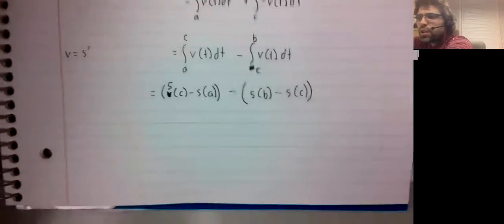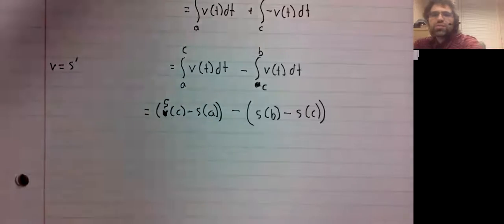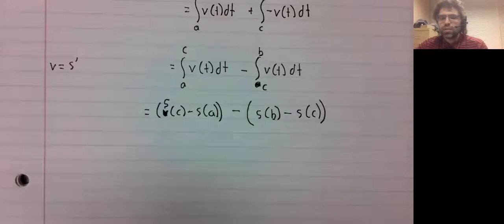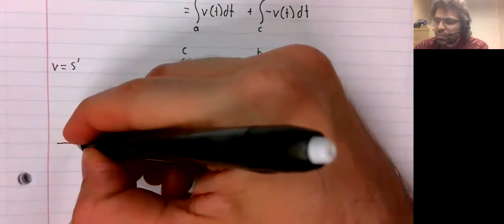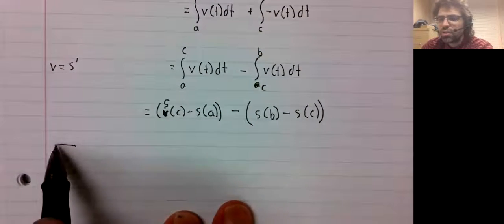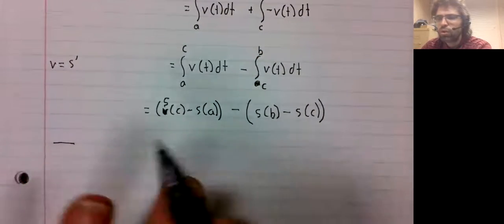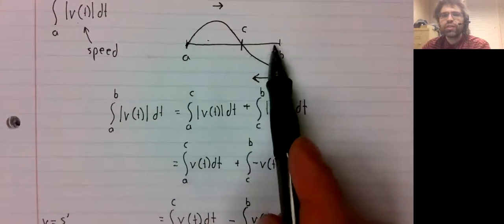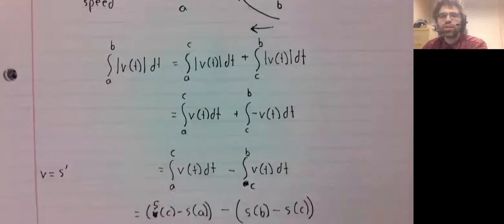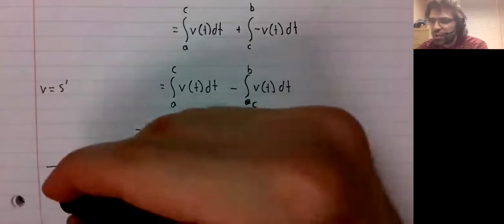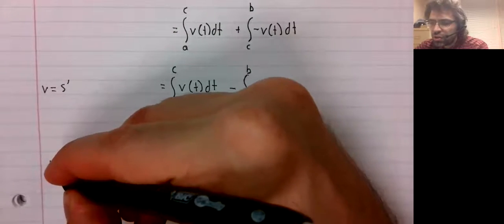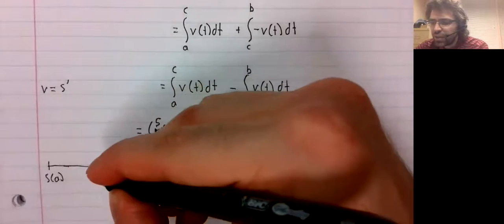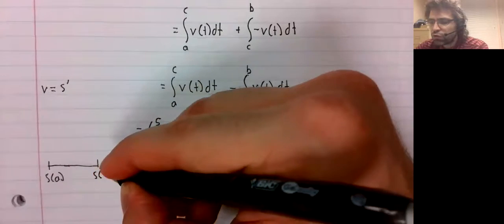And what's the difference? What does this mean? This object is going back and forth. First it's moving to the right, then it's moving to the left.